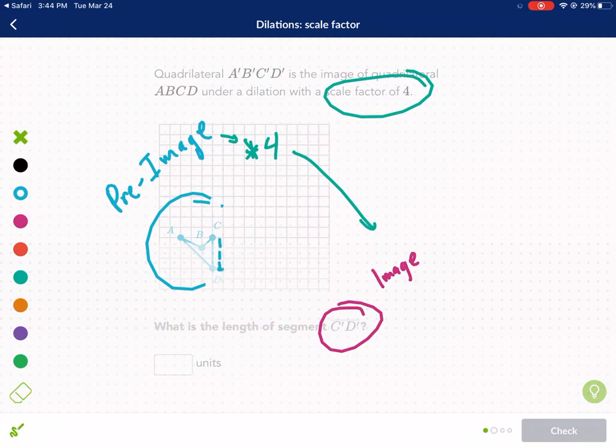So we look here and we see that CD is 1, 2, 3 units. So if we multiply this times 4, that would give us a length of 12 units.